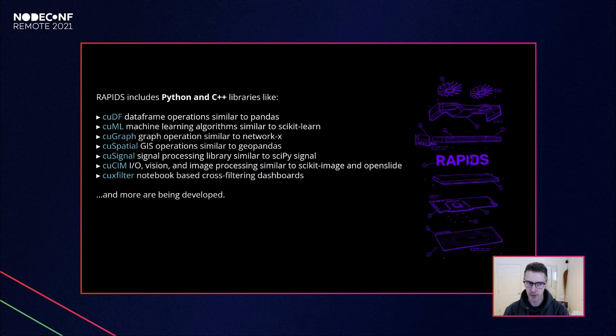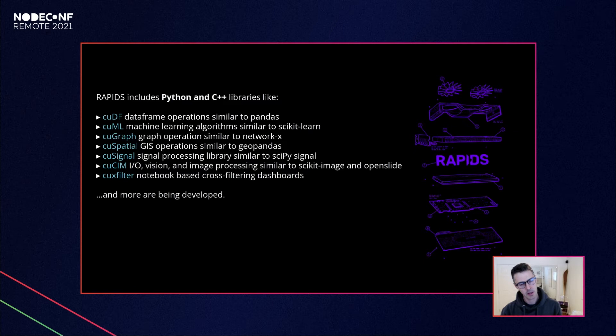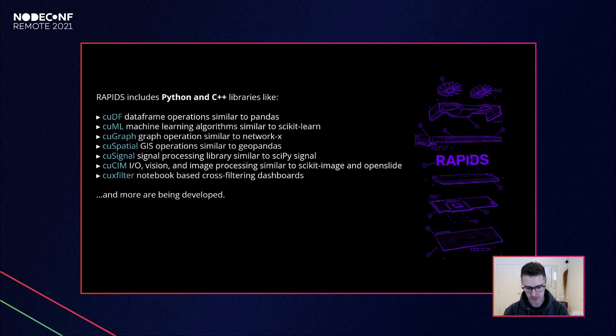A little more about rapids in general — it's mostly Python and C++ libraries. It encompasses things like cuDF for data frame operations (similar to pandas), cuML for machine learning algorithms, cuGraph, and spatial and signal processing libraries. They all work nicely together and are GPU-accelerated with speed-of-light performance. cuCrossFilter, a notebook-based cross-filtering dashboard, is one the viz team is working on, and many more libraries are being developed, making a big impression on the data science world.